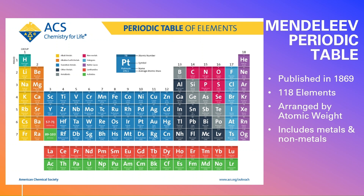Here you see the Mendeleev Chart of the Elements. This was first published in 1869. It contains 118 elements by current modern-day standards. It's arranged by atomic weight, and it includes a variety of information regarding whether a specific element is a metal or non-metal. The noble gases are contained in a column on the right-hand side, and we see that hydrogen is the very first element of this chart.